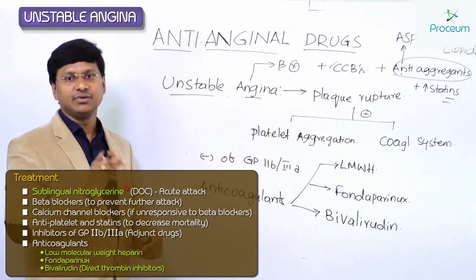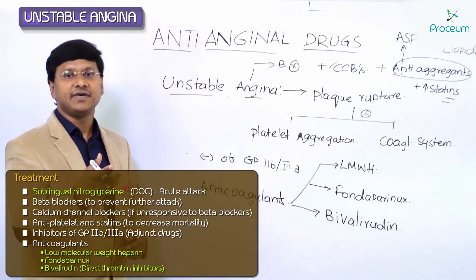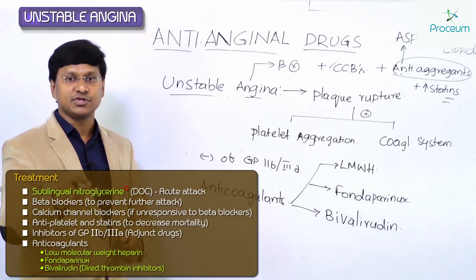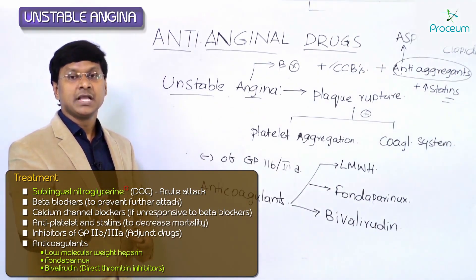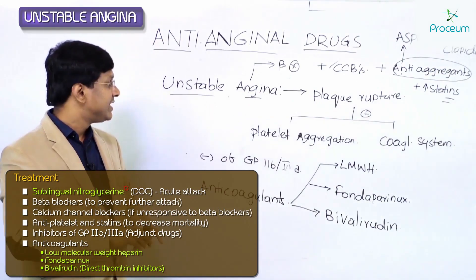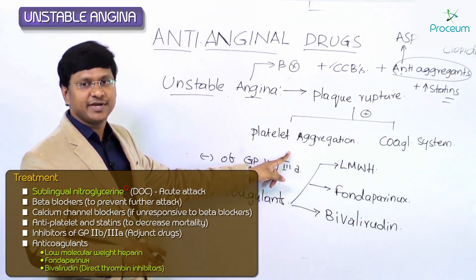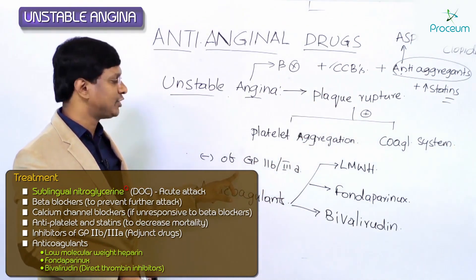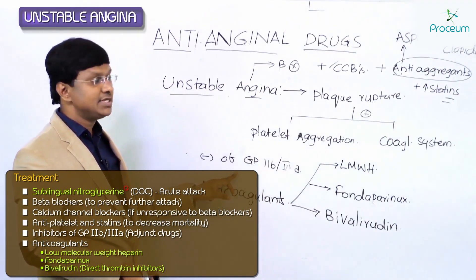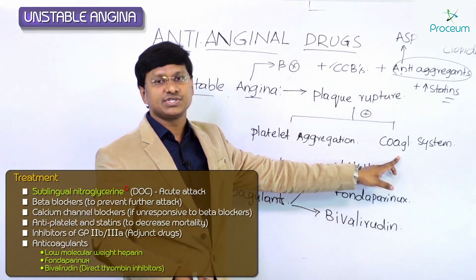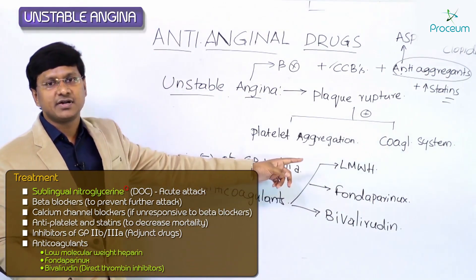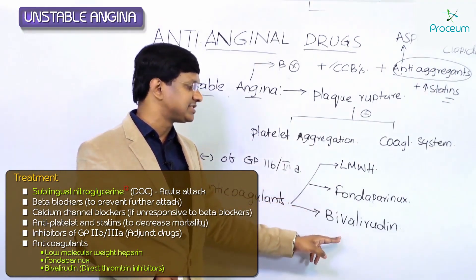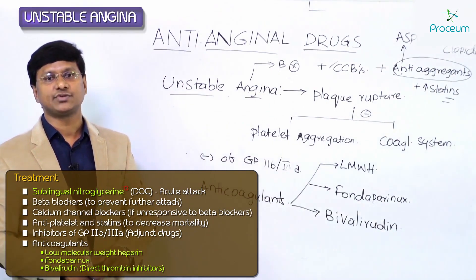In summary: for acute attack, give sublingual nitrates. To prevent further attacks, give beta blockers. If the individual does not respond to beta blockers, add calcium channel blockers. Also give anti-aggregants — aspirin and clopidogrel — plus glycoprotein 2b/3a inhibitors. To neutralize the activated coagulation system, give anti-coagulants: preferred low molecular weight heparin, with alternatives fondaparinux and bivalirudin, a direct thrombin inhibitor.